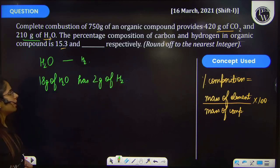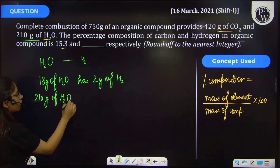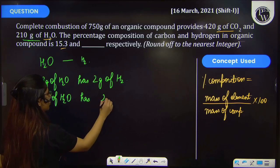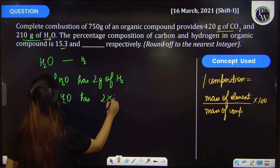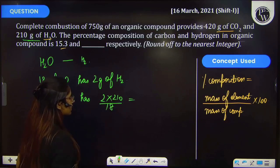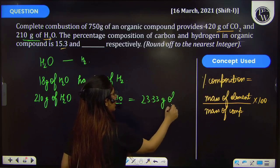But I have to calculate for 210g. So 210g of water will have hydrogen as 2 times 210 divided by 18. On calculating this, you get 23.33g of hydrogen.